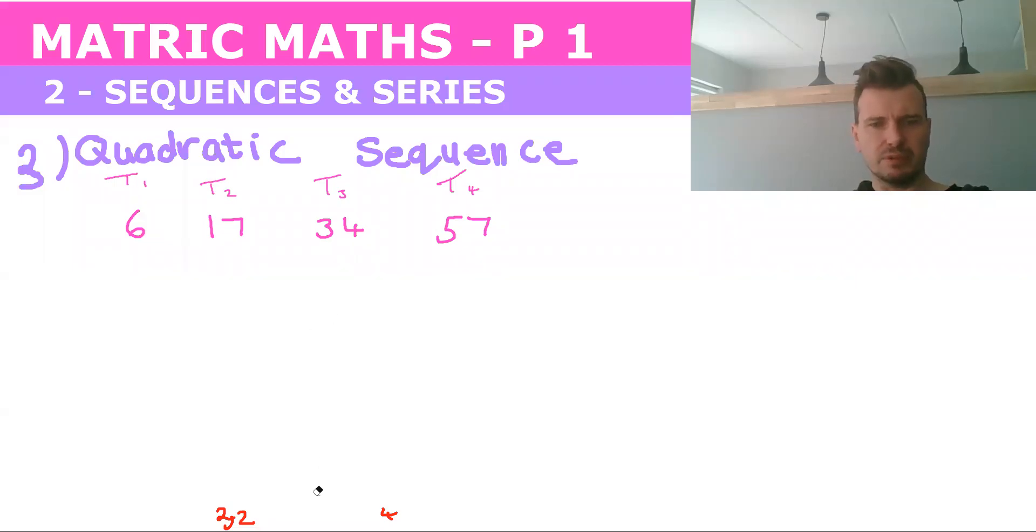Okay, so the third type of sequence for matric is the quadratic sequence. So the formula at the back for quadratic sequence, I'm not sure if they show you, but it's really easy to remember because there are some formulas that you need to remember for a quadratic sequence.